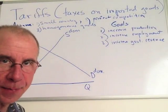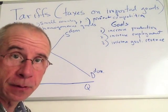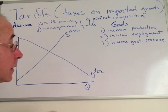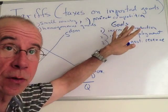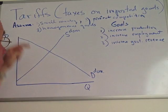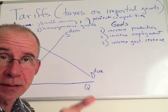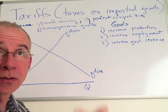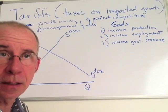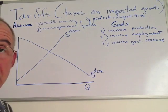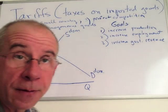We're going to take a look at the economic impact of a tariff in a simple example. Tariffs are taxes on imported goods, and we're going to start with three basic assumptions: one, it's a small country — that is to say, it's a price taker on international markets; two, there's perfect competition within the domestic economy; and three, they're homogeneous goods. These three basic assumptions are an important part of the story.